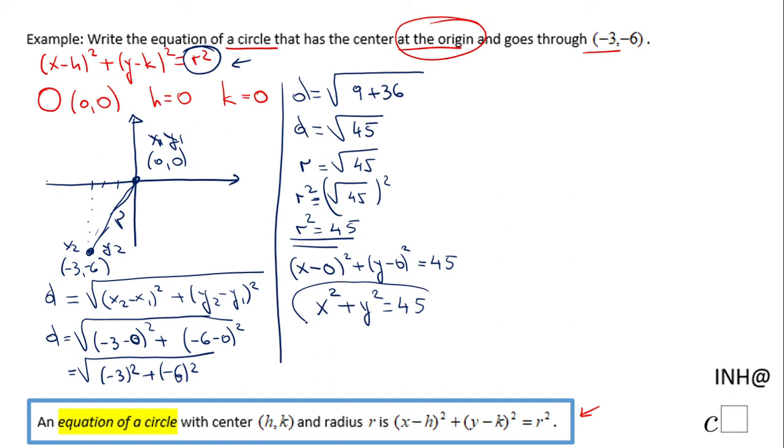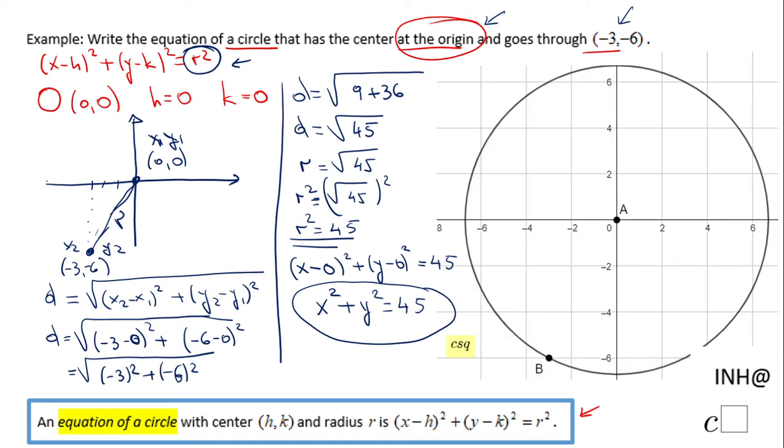This is the equation of a circle that has the center at the origin and goes through this point. You can see a picture here and you can see the same story. Another way to do this problem is to use Pythagorean theorem if you want and you do not remember the distance formula. Do this triangle on graph paper; this is 6, this is 3, and use Pythagorean theorem and you're going to get the radius.